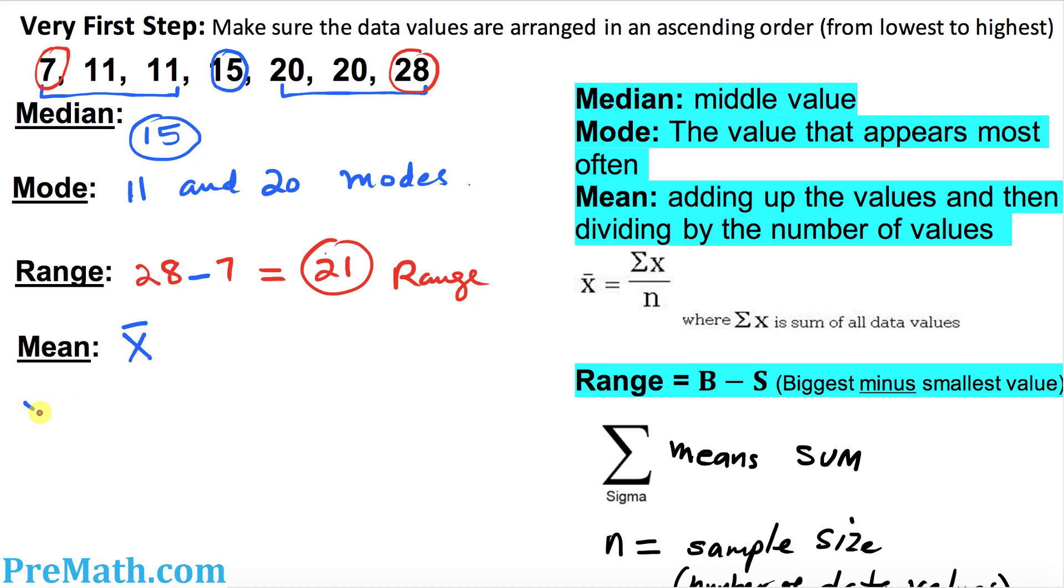So x bar is going to be 7 plus 11 plus 11 plus 11 plus 15 plus 20 plus 20 plus 28, divided by the sample size, which is 7. If you add the top part, 112 divided by 7 gives you 16. So 16 turns out to be our mean.